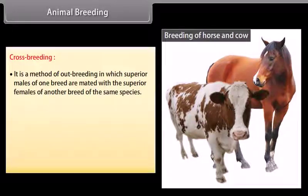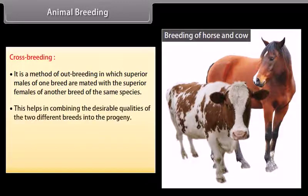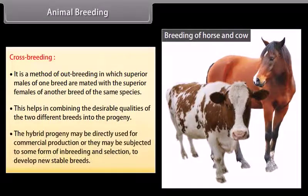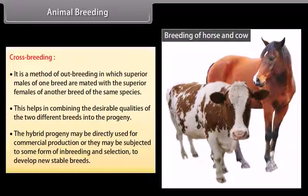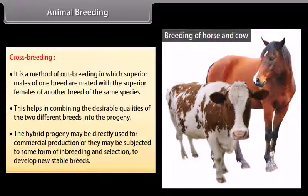Cross breeding is a method of outbreeding in which superior males of one breed are mated with superior females of another breed of the same species. This helps in combining the desirable qualities of two different breeds into the progeny. The hybrid progeny may be directly used for commercial production or subjected to some form of inbreeding and selection to develop new stable breeds. One example of cross breeding is Hisardale, a new breed of sheep developed by crossing Bikaneri ewes and Merino rams.